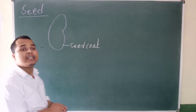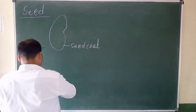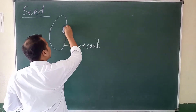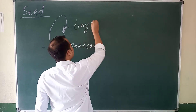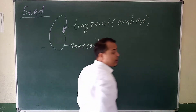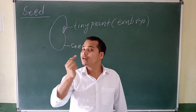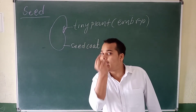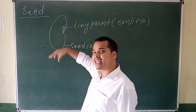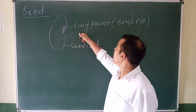Inside the seed, there is a tiny — that means a small — plant. This small plant inside the seed is called the embryo. Think about the coconut: if you keep a coconut for two or five months, you will find a small green plant inside the coconut. That is because a tiny plant — the embryo — is present inside the seed.